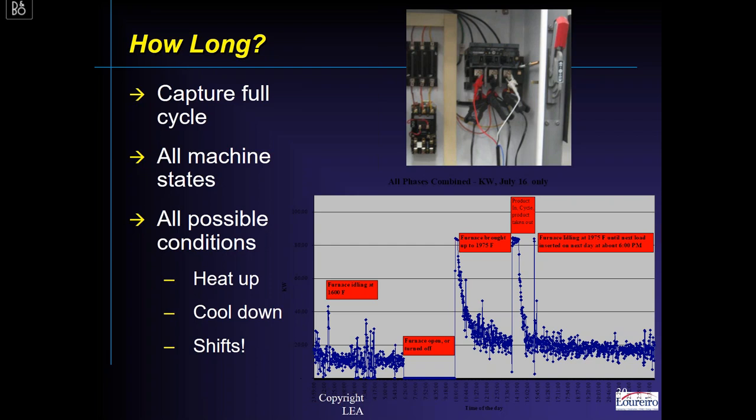A question from Bob: how small of an interval would you use for data logging? It depends on the process and the memory of the logger. If you've got a really good extended-memory logger, I'd tend to go with a shorter interval rather than a longer one, especially if the motor goes through changes like loading and unloading. Another good example of a motor that changes its energy use is a conveyor — running with no product versus running with a lot of product. In distribution centers, that can change significantly depending on volume and month-end rushes.